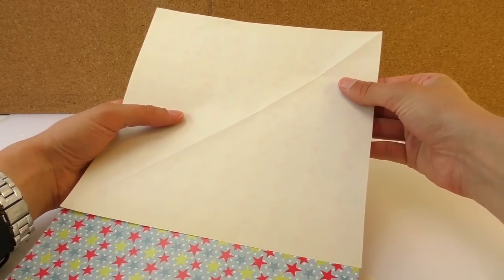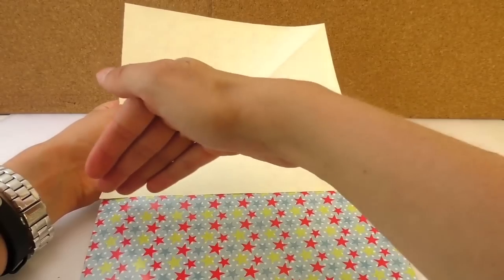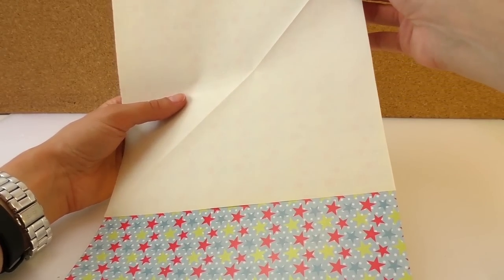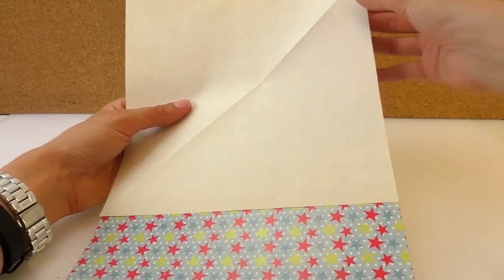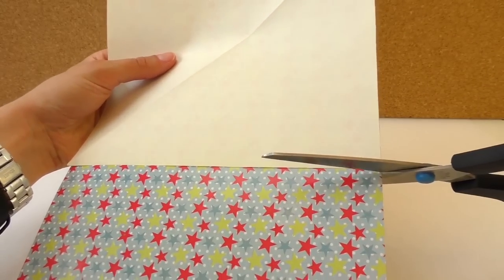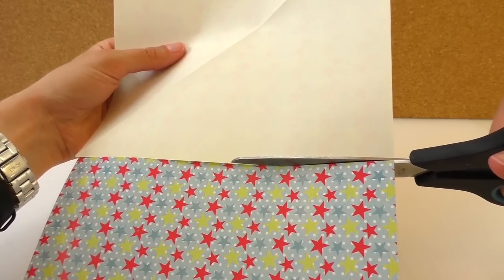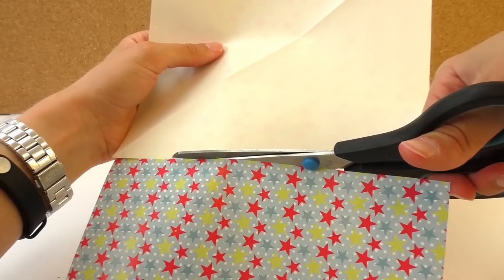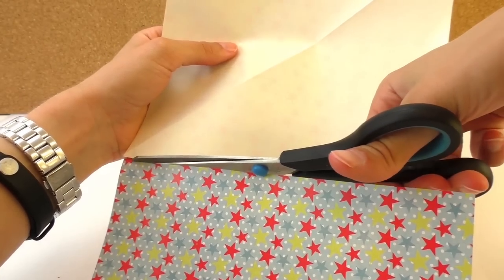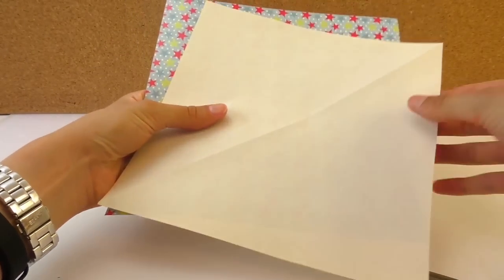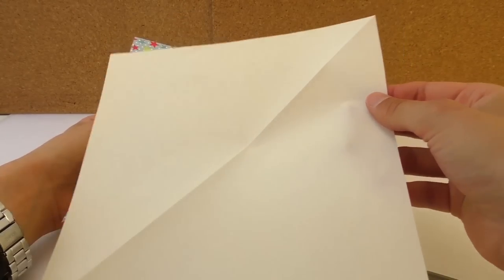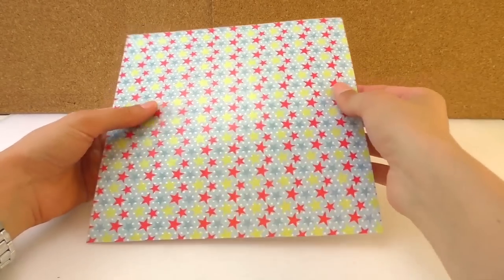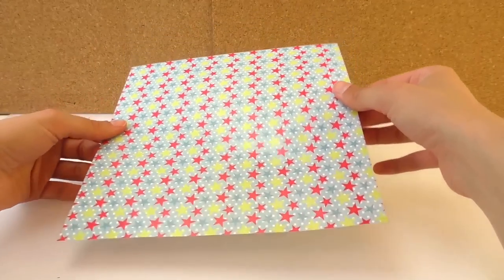So this is what we're going to do. We're going to put it on top very well like this. And then we're going to cut the remaining part. And this one, that's our pattern, we can save it for later if we want to do another envelope. So we're just going to put it aside.